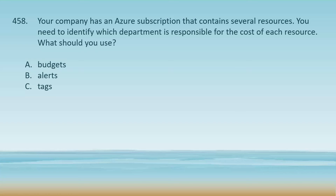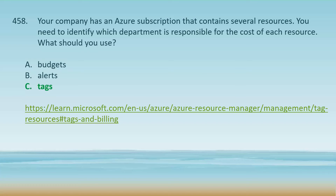You should use tags to identify which department is responsible for the cost of each resource. Tags in Azure are key-value pairs that you can apply to resources, resource groups, or subscriptions to organize and categorize resources. You can assign tags like Department: Finance or Department: HR to resources, making it easier to track usage and costs by department when reviewing cost analysis or generating reports in Azure Cost Management. Budgets are used to define and monitor spending limits, not to identify responsibility. Alerts notify you about conditions like exceeding a budget but do not help in categorizing resource ownership.